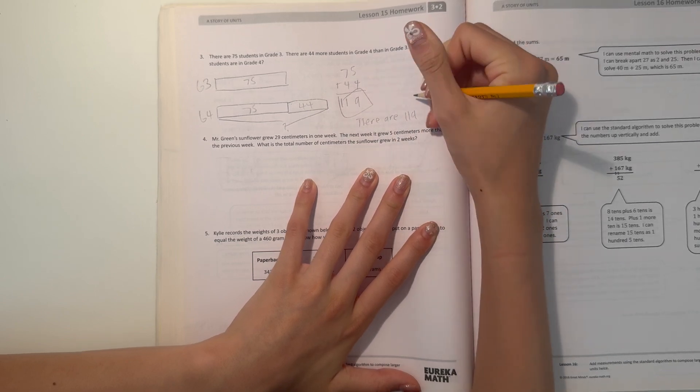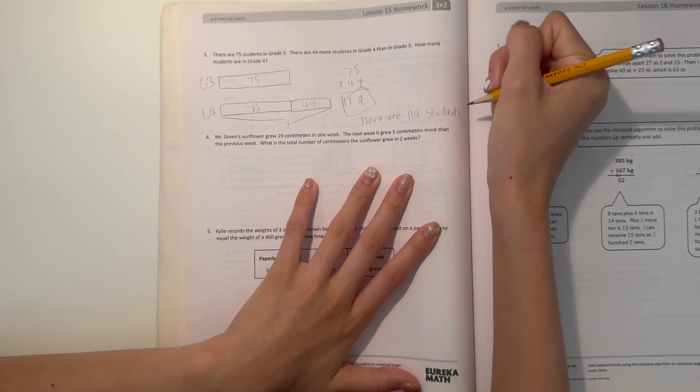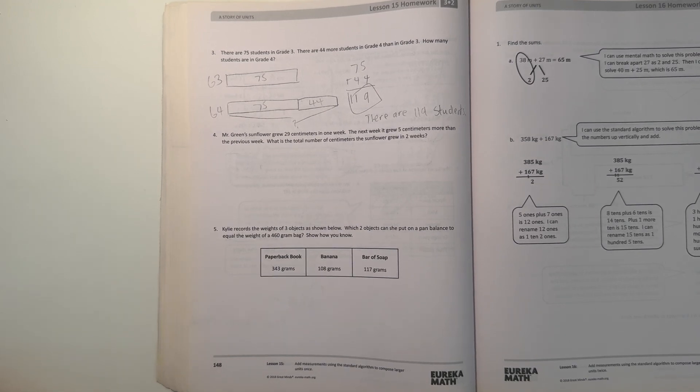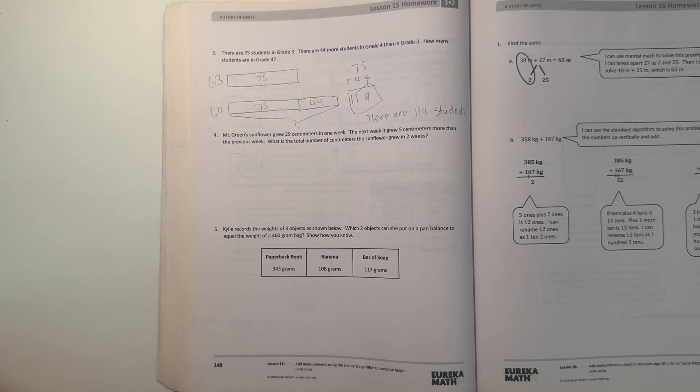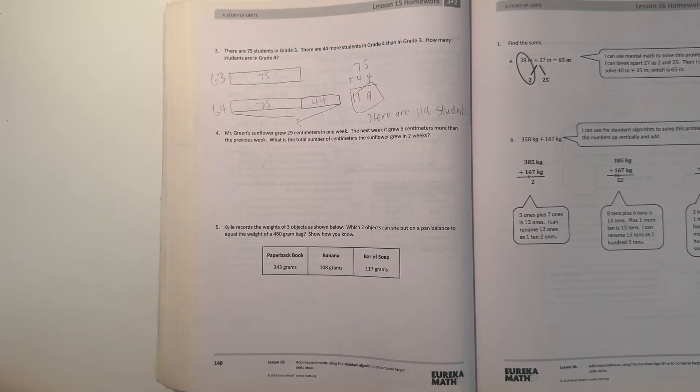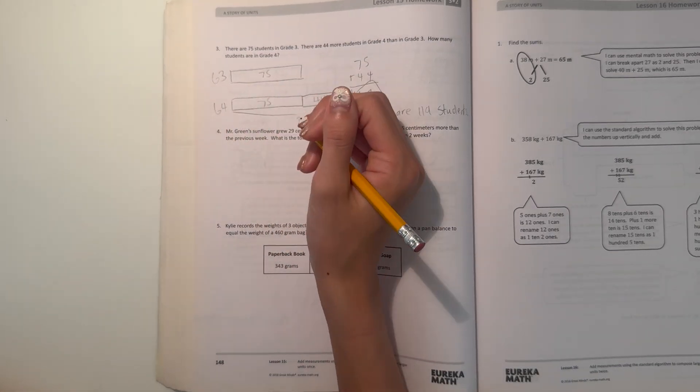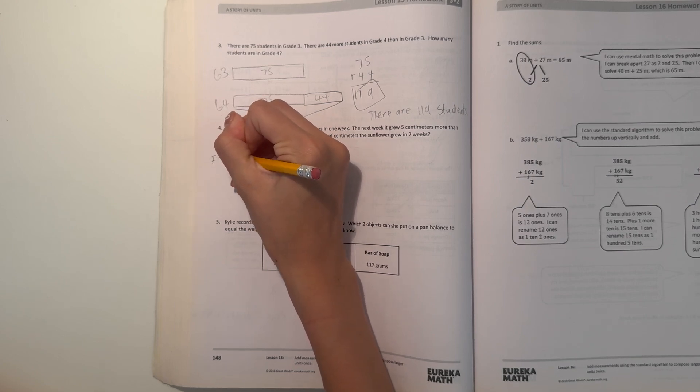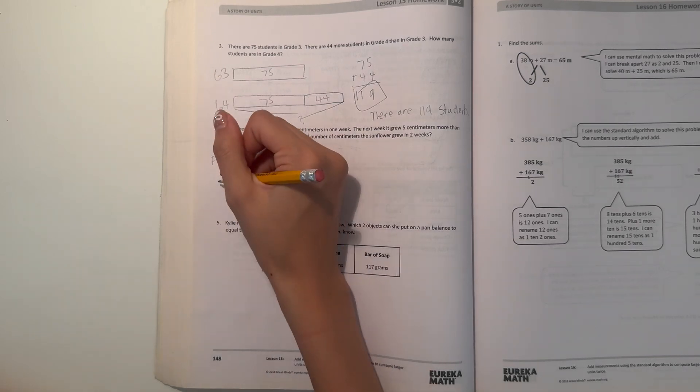Number four: Mr. Green's sunflower grew 29 centimeters in one week. The next week it grew five centimeters more than the previous week. What is the total number of centimeters the sunflower grew in two weeks? This is a two-step problem because we need to find out first how much it grew in the second week, then add the second week and the first week together to find the total. First week it grew 29 centimeters. Next week it grew at least 29, but it grew five centimeters more.